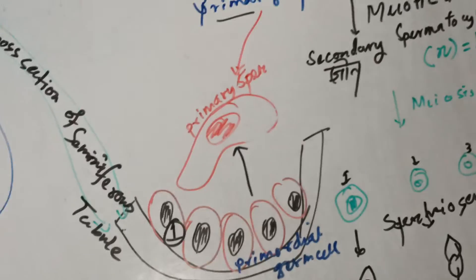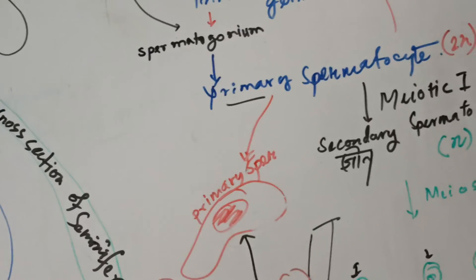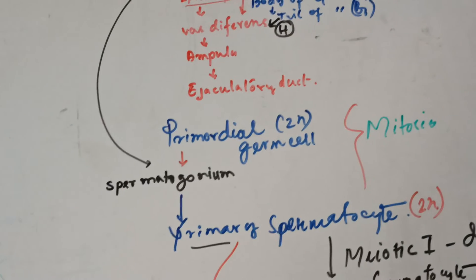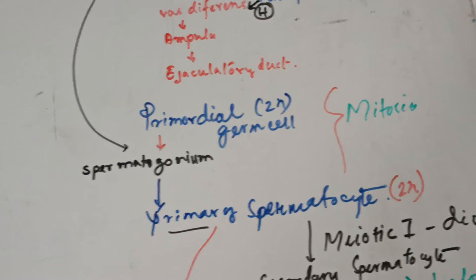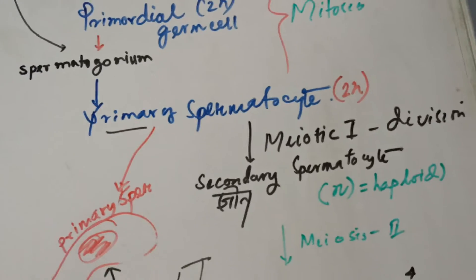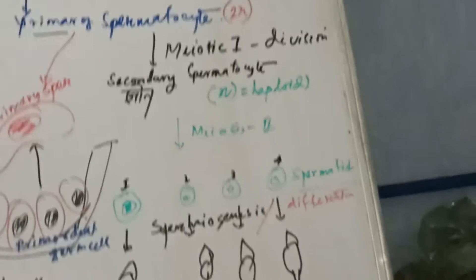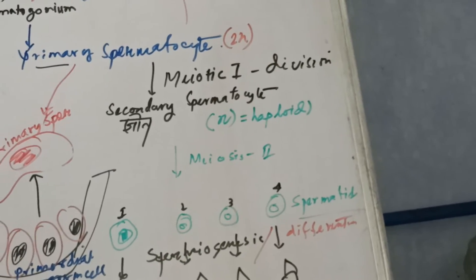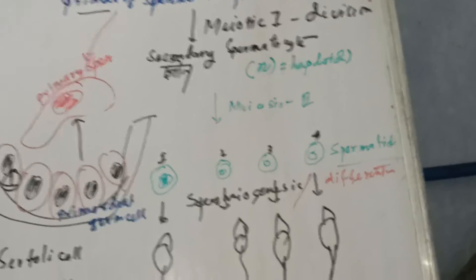If you take a section of the seminiferous tube, you will see primordial germ cells that are diploid. From there, mitotic division takes place and spermatogonia form primary spermatocytes. Then meiosis I takes place and division makes two haploid cells, and another round of meiosis division occurs.